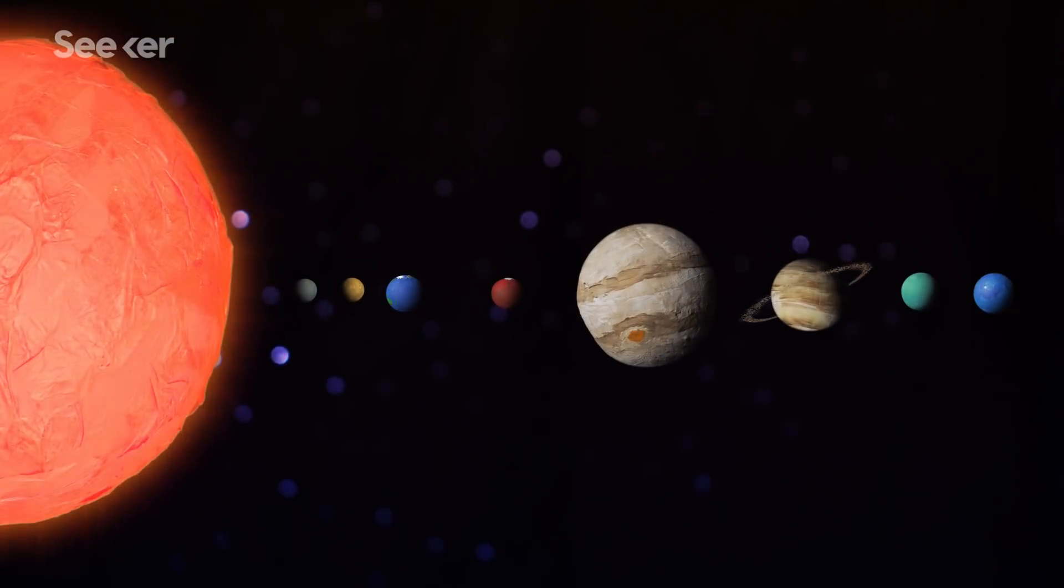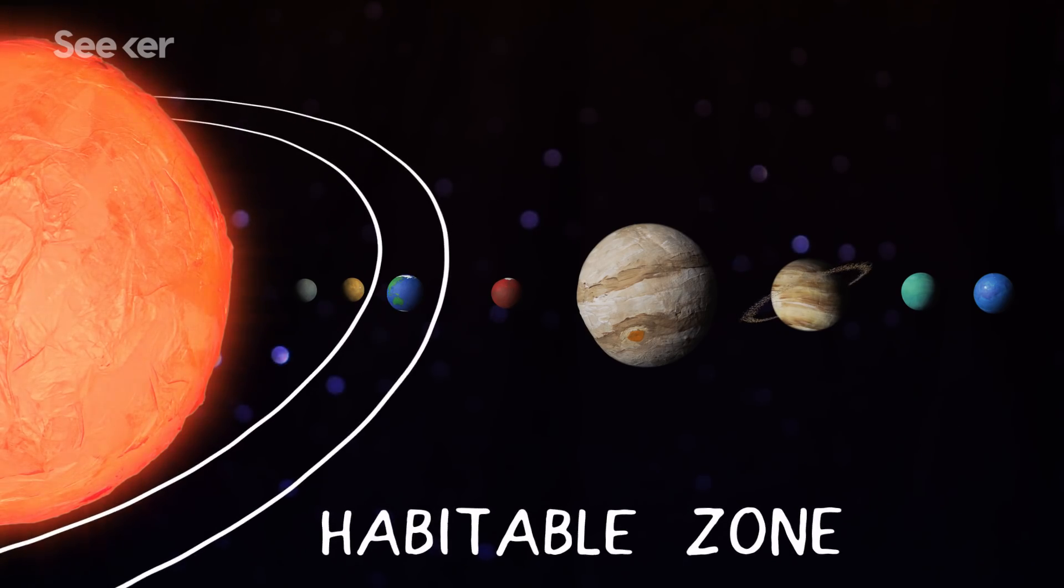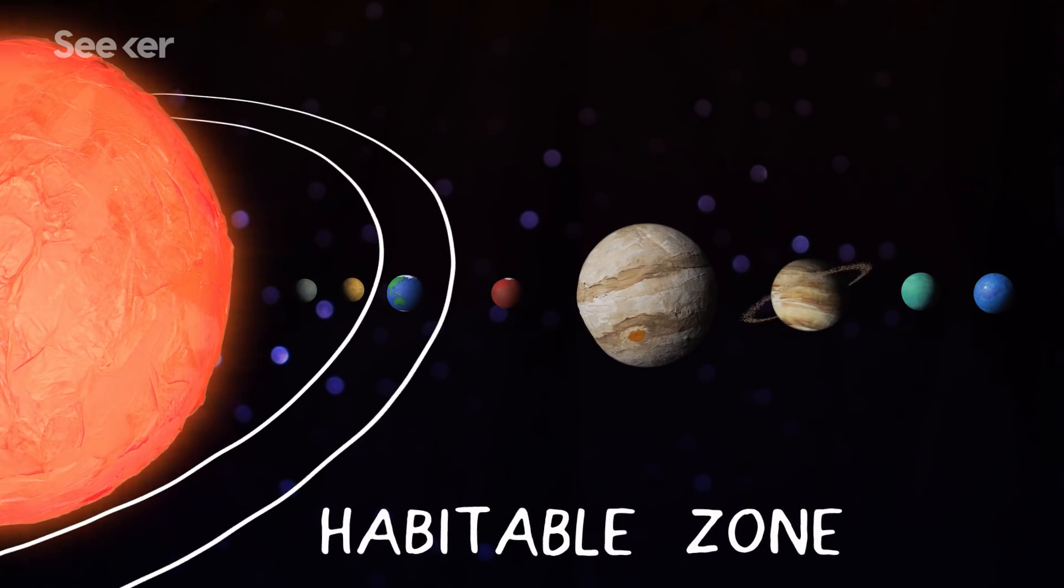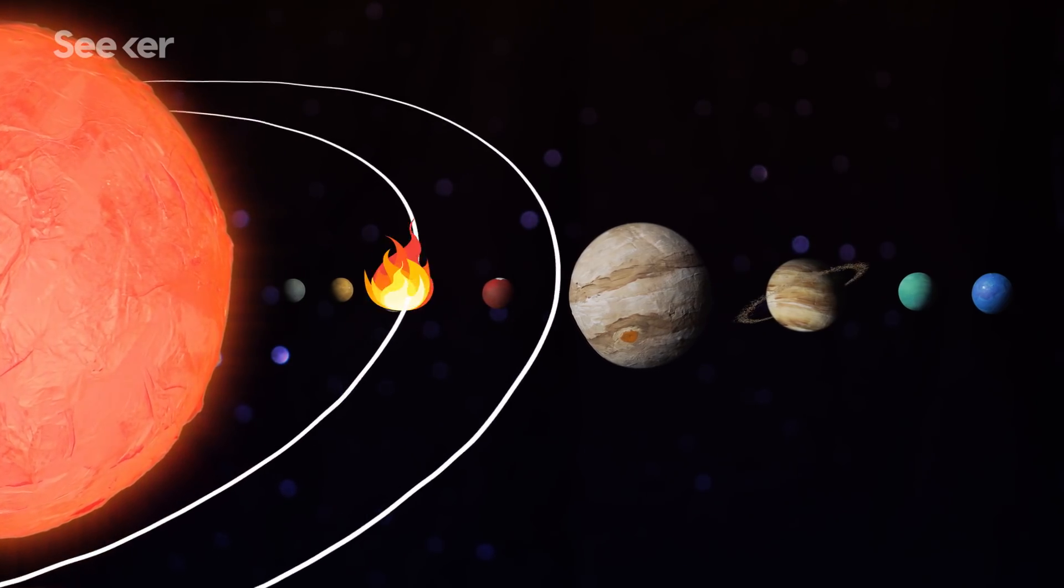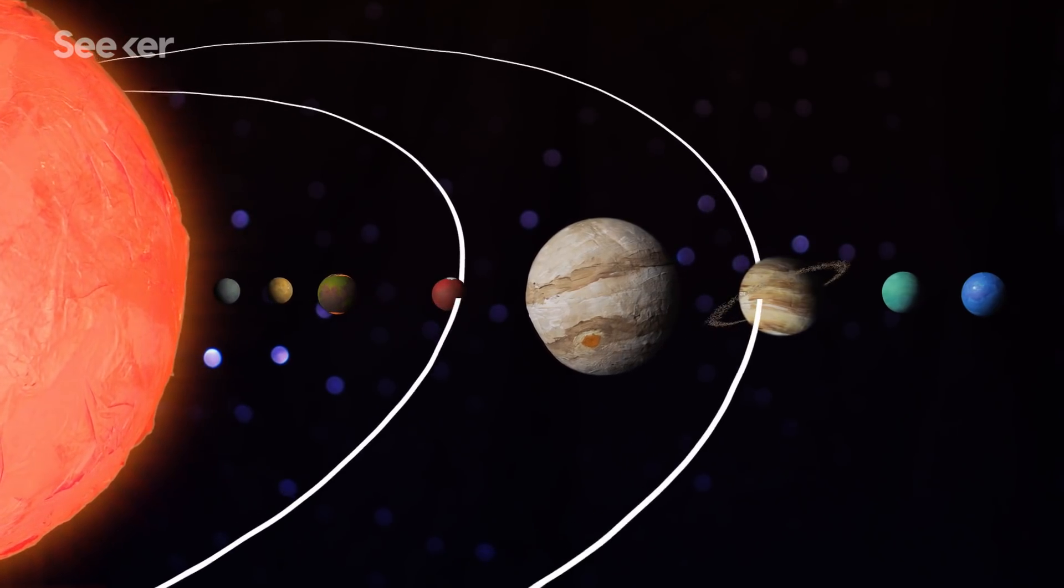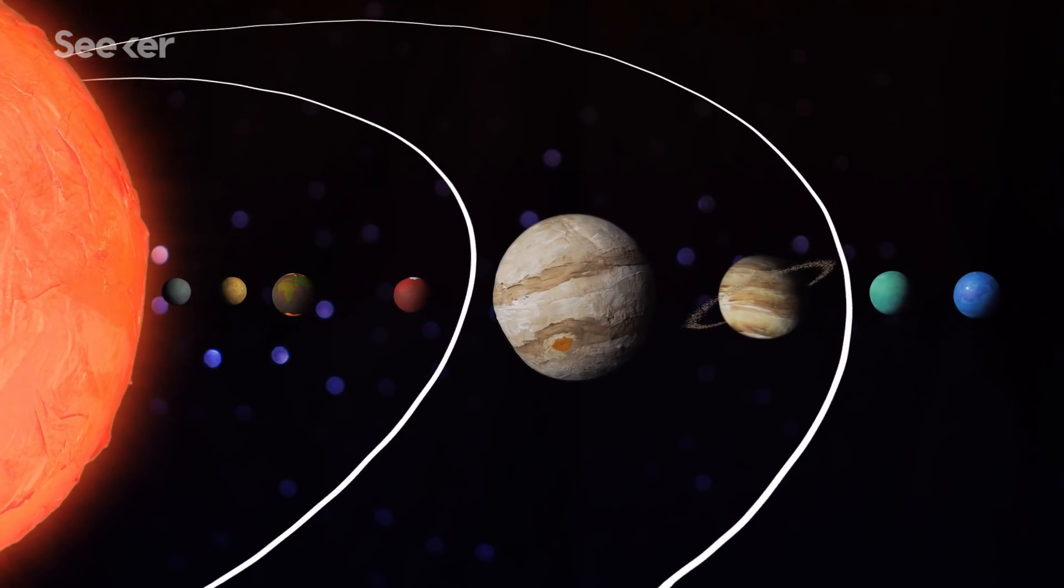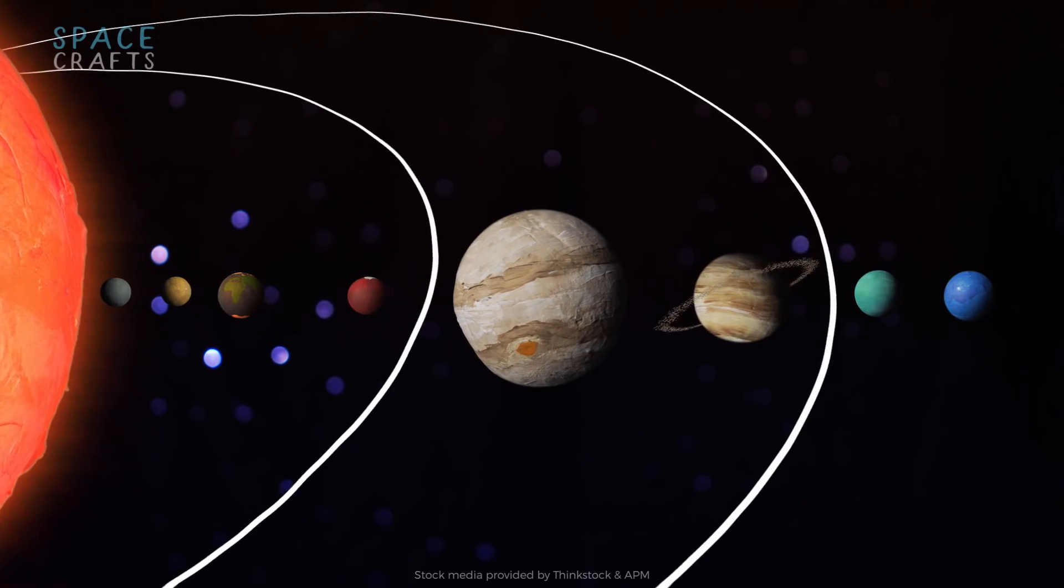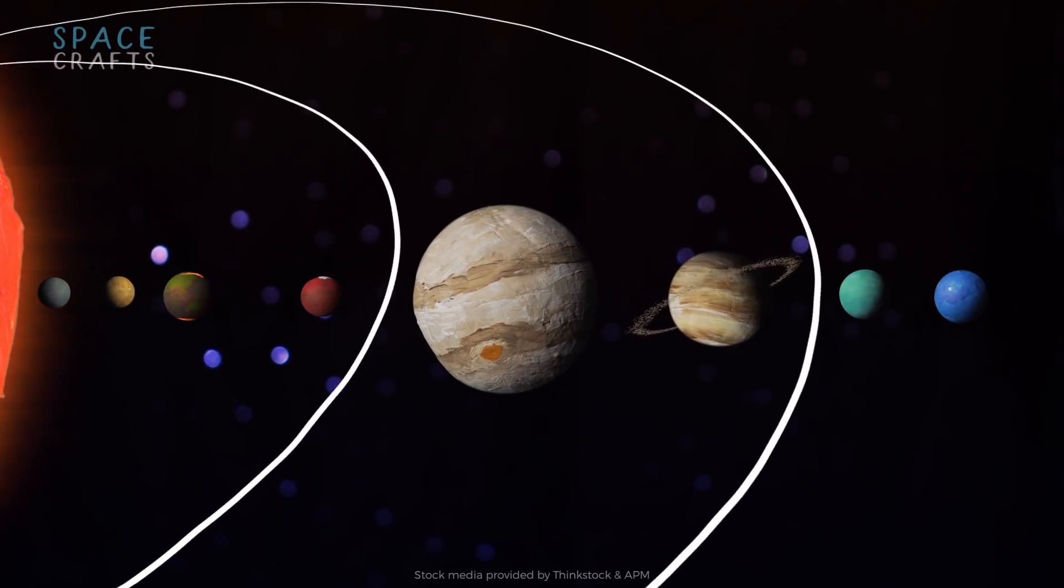But there is an upside to this. When stars morph into red giants, they change their habitable zone. The habitable zone is a region with the right conditions for life. So as the Sun gets larger and redder, its warmth will extend to the outer reaches of our solar system, making it possible for life to begin on a whole new planet.